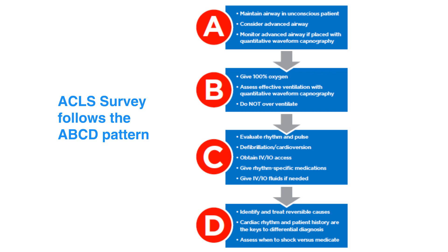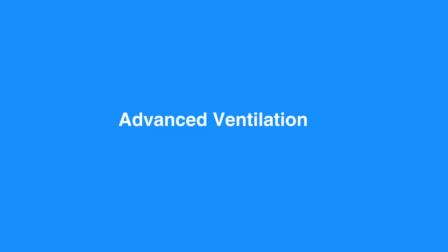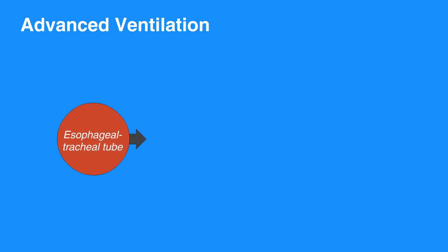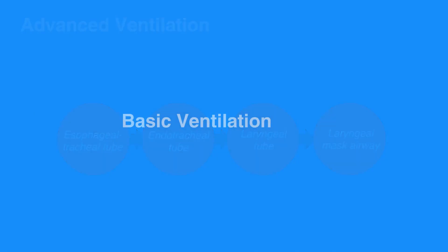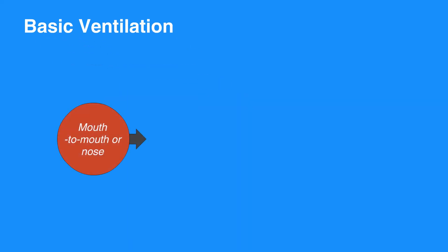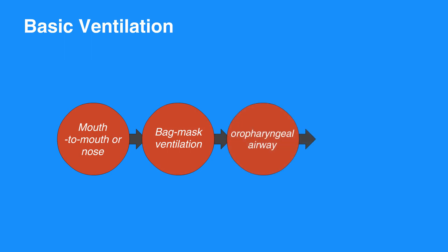When caring for individuals in respiratory arrest, keep in mind the two types of ventilations: advanced and basic. Advanced ventilation includes esophageal tracheal tube, endotracheal tube, laryngeal tube, and laryngeal mask airway. Basic ventilation includes mouth-to-mouth or nose, mouth-to-bag ventilation, oropharyngeal airway, and nasopharyngeal airway.